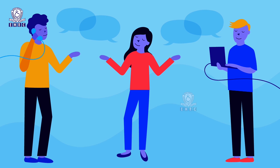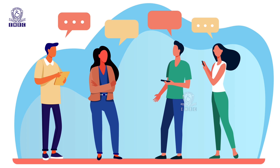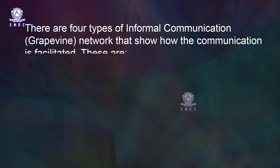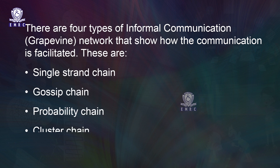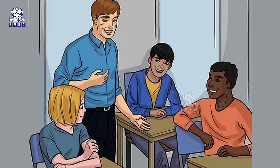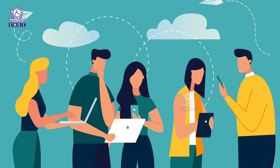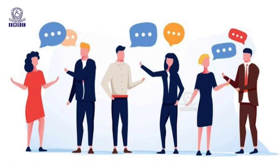Such communication often arises out of social relations that an individual creates with others on the basis of common interest, likings or dislikings. There are four types of informal grapevine networks: single strand chain, gossip chain, probability chain, and cluster chain. Gossip among teachers or students is the best example of informal communication. The grapevine satisfies the social needs of people and smoothens formal relations by filling in gaps and bringing together people who do not fall under the common chain of command.